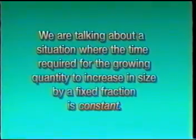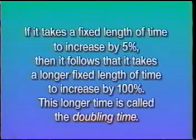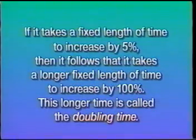We're talking about a situation where the time required for the growing quantity to increase by a fixed fraction is a constant. Five percent per year — the five percent is a fixed fraction, and 'per year' is a fixed length of time. That's what we mean by ordinary steady growth. If it takes a fixed length of time to grow five percent, it follows that it takes a longer fixed length of time to grow a hundred percent.